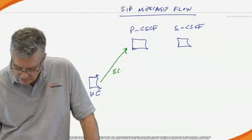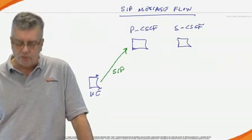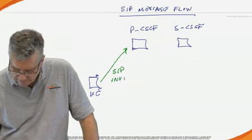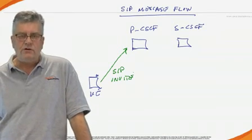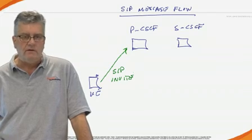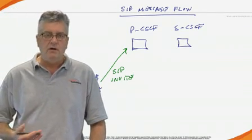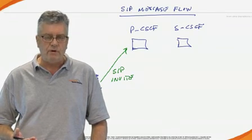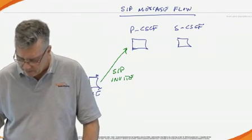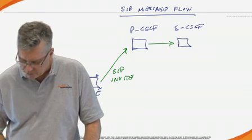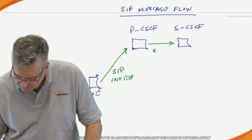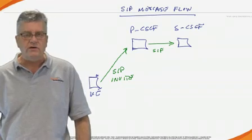I'm going to send a SIP message. For example, if I'm doing a VoLTE call, I'm going to send a SIP invite. That's going to go to the proxy CSCF. And remember, I obtained the identity and IP address of the proxy CSCF when I attached to the network. The proxy CSCF is going to forward that SIP invite onto the serving CSCF.